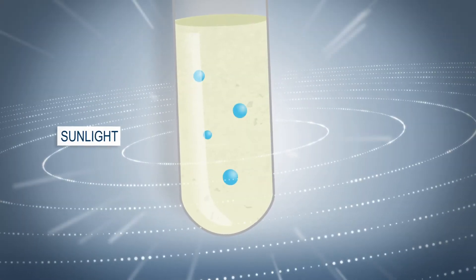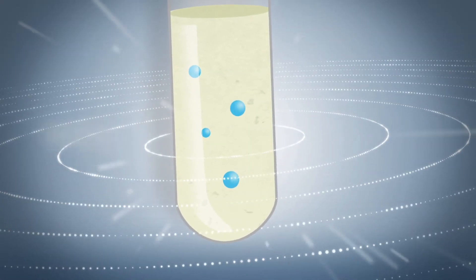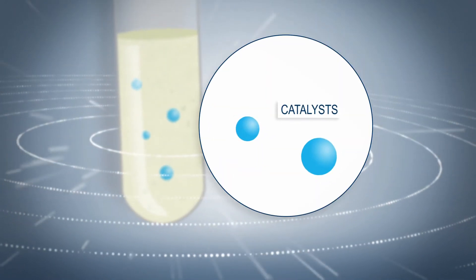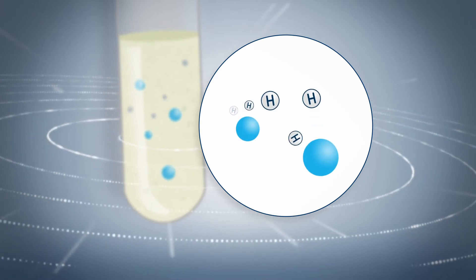Once the sunlight meets the catalyst, a chemical reaction takes place. Oxidization disperses the molecules from the biomass and the hydrogen is released. It rises to the surface in the form of bubbles.